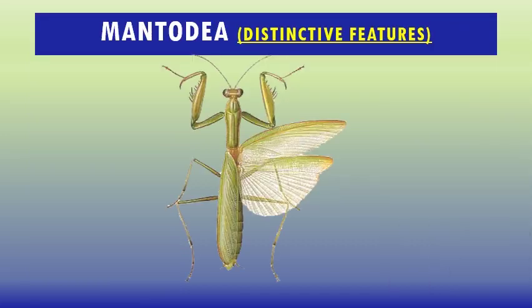The members of Mantodia are commonly called mantises or praying mantis. They were considered to have supernatural powers by early civilizations including ancient Greece, ancient Egypt, and Assyria. The name Mantodia is derived from the ancient Greek word 'mantis' meaning prophet, and 'eidos' meaning form or type. Females sometimes practice sexual cannibalism, eating their male after copulation.